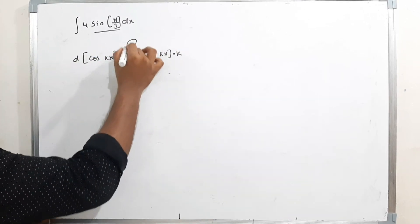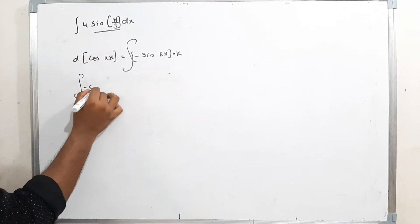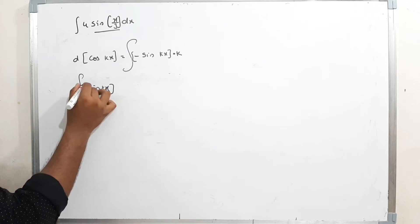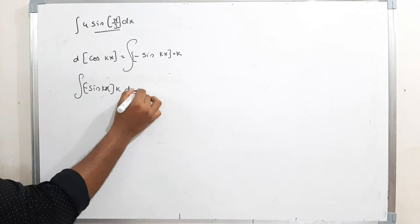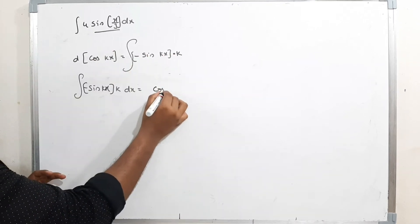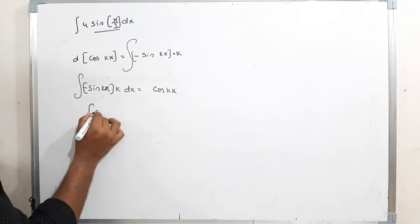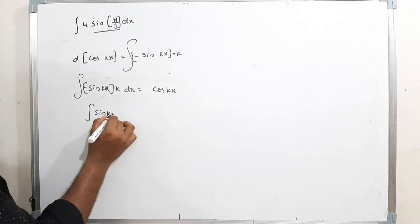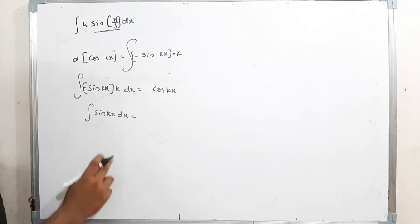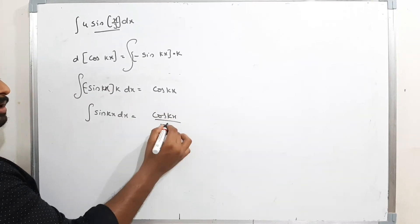If we do integration for both sides: the integration of -sin(kx)·k dx equals cos(kx). So the integration of sin(kx) dx is cos(kx) divided by (-k). This is the key formula to use.